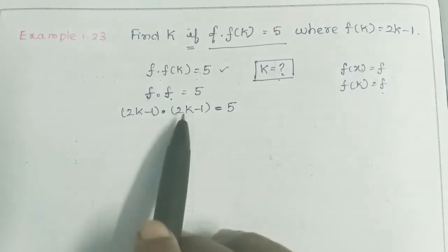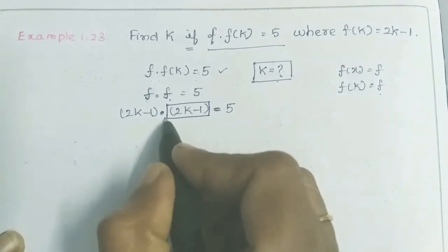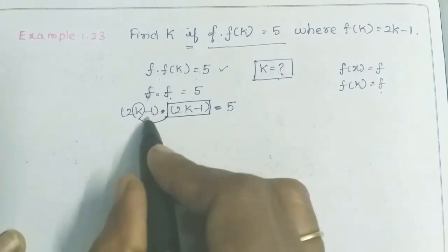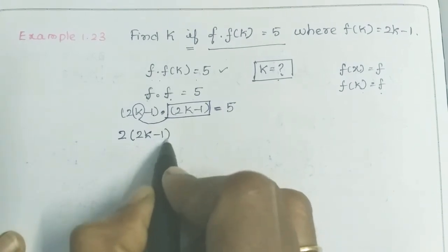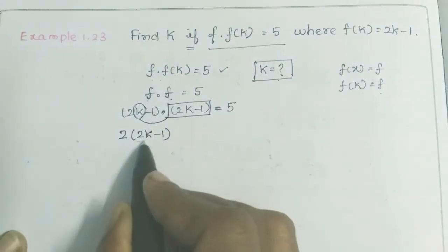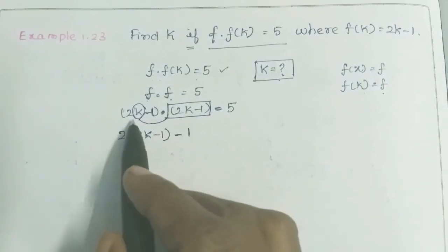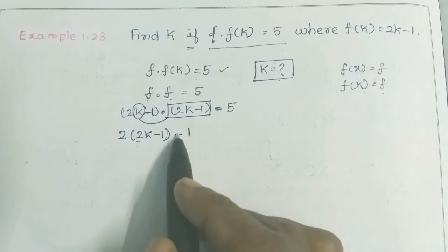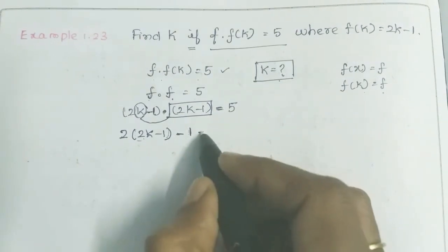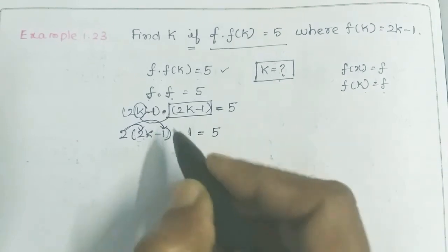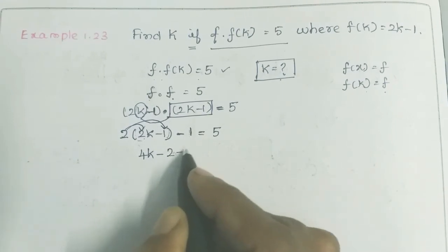F of f(k) will be equal to f of (2k minus 1). So f(k) is equal to 2k minus 1, which means we substitute (2k-1) in place of k. There is a little confusion — you need to put a bracket around (2k minus 1). Then it is equal to 5. So we multiply: 2 into 2k is equal to 4k, and minus 1 into 2 is 2, minus 1 is equal to 5.